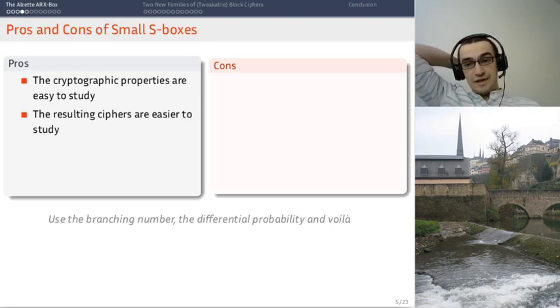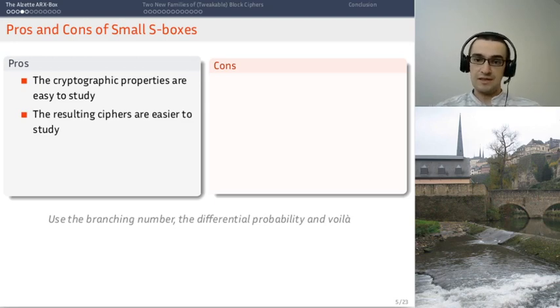The resulting ciphers are easier to study also. That's one of the main selling points of the AES, which is that it's provably secure against some specific forms of differential and linear attacks, because of the properties of the s-boxes and how they interact with the linear layer.